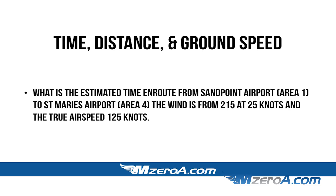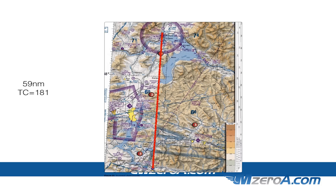First things first, we need to look at that sectional chart. I pulled it up here so you can see it. You can see Sandpoint Airport at the top in Area 1, and I'll draw a line straight down to St. Mary's Airport. I'll do a little bit of the legwork for you — our true course on that is going to be 181° and it's 59 nautical miles.